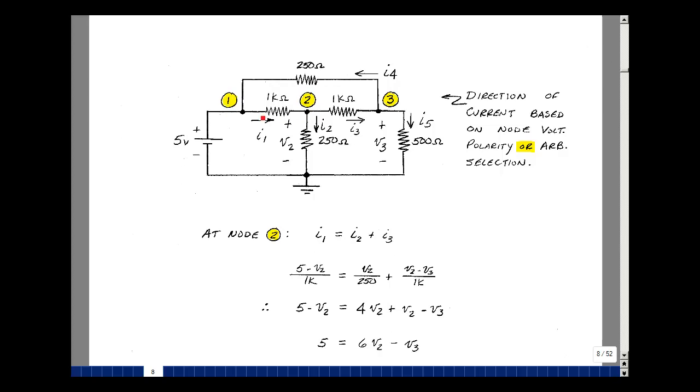So now let's do Kirchhoff's current law at the nodes where we can write an Ohm's law expression. I'll sum the currents at node 2. I1 is entering, I2 is leaving, I3 is leaving. But what is I1? Because of this direction, we're implying a polarity in this direction by Ohm's law. It's going to be node voltage 1, which we know to be 5 volts, minus node voltage 2, which is one of our unknowns, divided by 1k. The current I2 is simply V2 divided by 250, and the current in this other 1k resistor is node voltage 2 minus node voltage 3 divided by 1k.